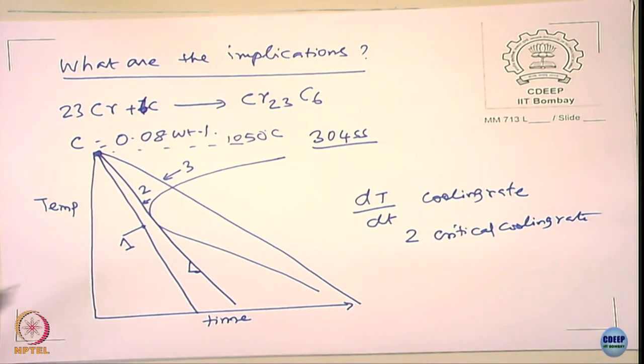You need to understand what governs the time-temperature-transformation diagram. This diagram is very relevant because we are going to talk about weld decay and how to avoid it or how to make new alloys — all of them are based on this diagram.